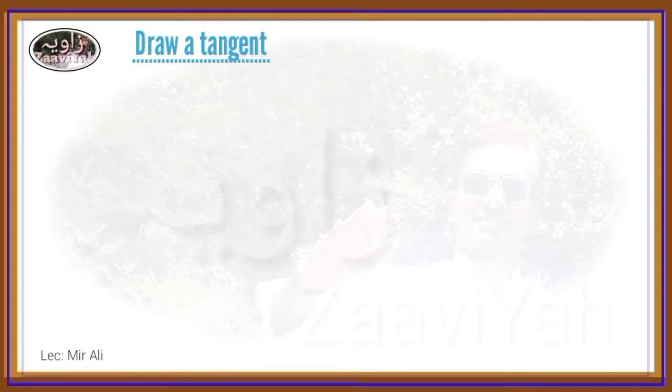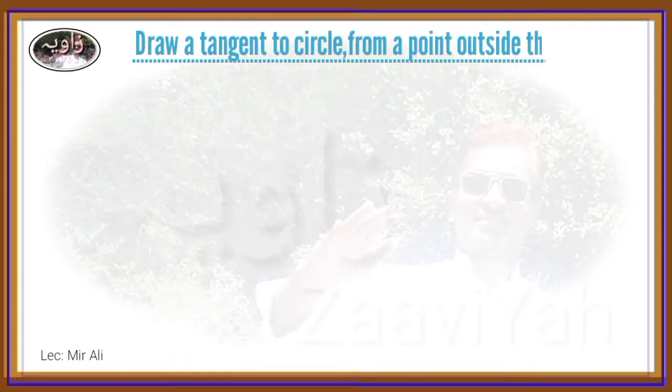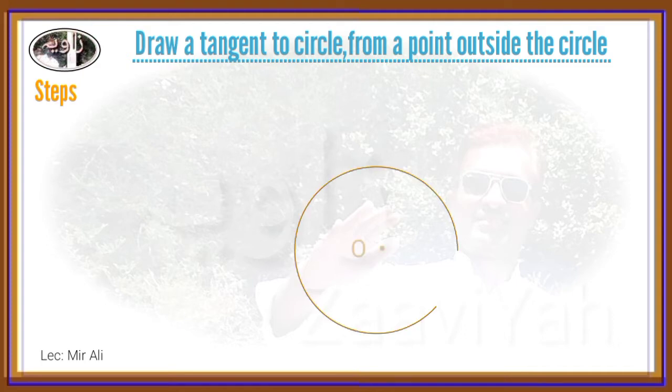Draw a tangent to a circle from a point outside the circle. If you have a circle, you can see the circle and the point. You can see the circle and point P.